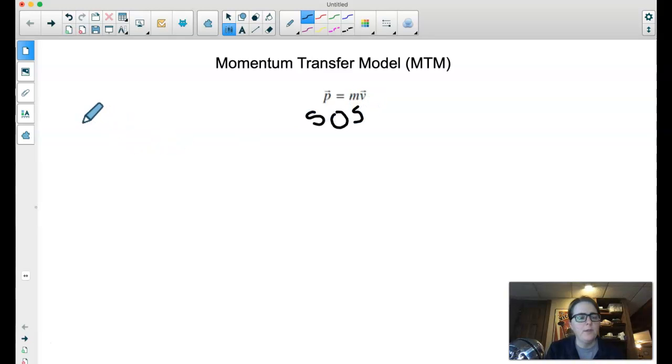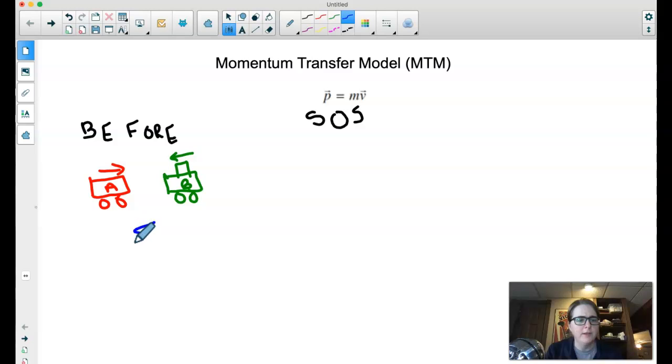So the first diagram I'm going to talk about is the SOS diagram, where the first S represents the before sketch. So you would draw a little picture of what's going on in the before scenario. So I'm showing two carts going towards each other. So I have cart A, and then cart B. I'm going to give cart B some extra mass. And then the idea is you would use this sketch to figure out what is the total momentum of your system before the collision.